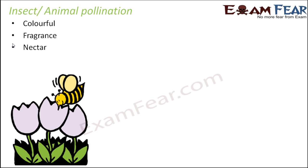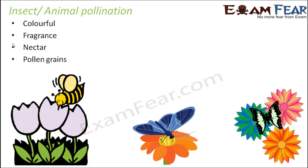When an insect sits on a flower, pollen grains stick to the body of the insect or animal. When that insect then sits on a stigma, those pollen grains are released and pollination takes place. As you can see here, this is how an insect sits on the flower — pollen grains stick to its body, and when the same insect moves to and sits over the stigma, the pollen grains are released and pollination occurs.